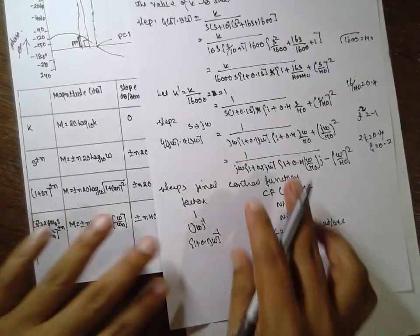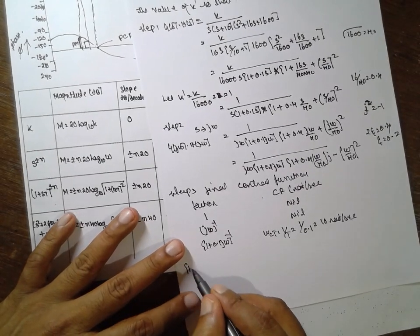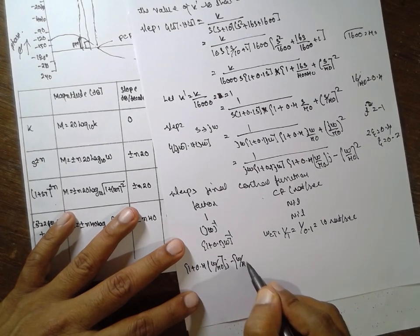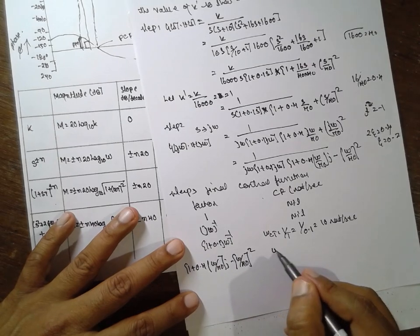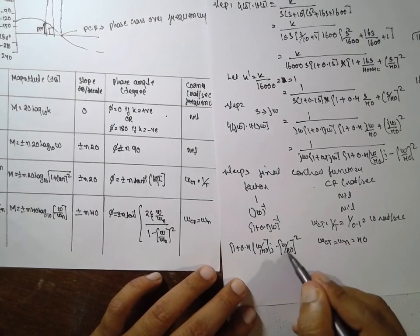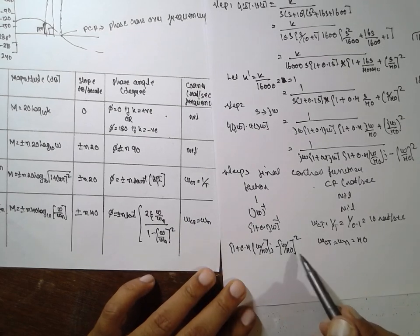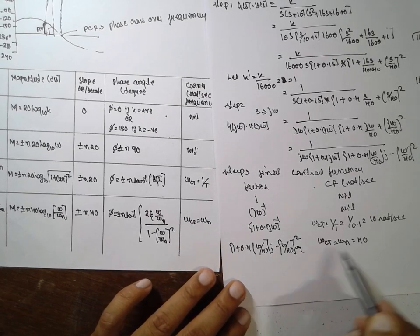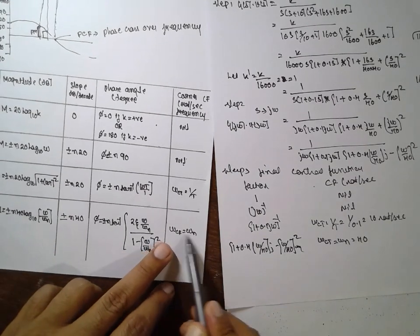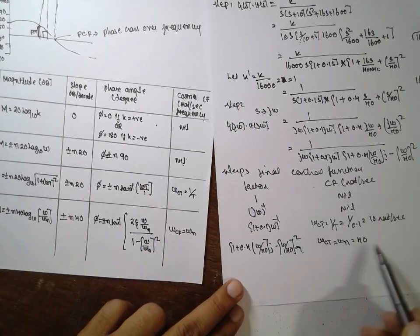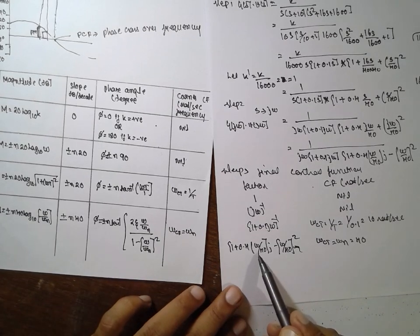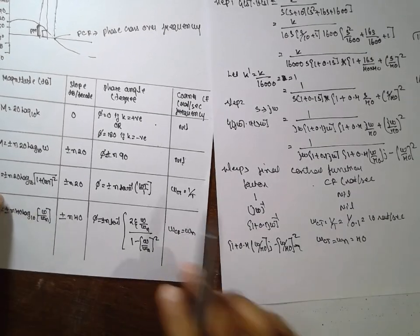Next is the quadratic equation — this plays an important role. For (1 + 0.4ω/40·j − (ω/40)²), the corner frequency Wcf equals ωn, which is 40. Whatever value appears here you have to write — ωn must be consistent. If it is 30, write 30; if 50, write 50. Both values must be the same, otherwise the problem is wrong.